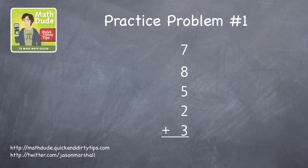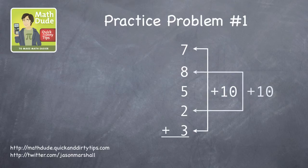So instead of adding from top to the bottom, one by one, look for pairs of numbers that add to 10. 7 and 3 is 10, 8 and 2 is 10, so the problem is really just 10 plus 10 plus 5, which is 25.